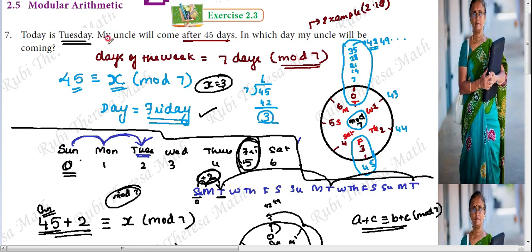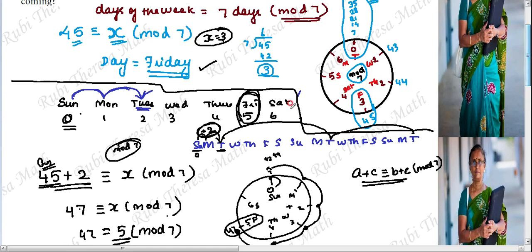When you get 0 to 6 on the cycle, you identify what day it is. The cycle starts from Sunday. If you add 2 days or 3 days, you jump forward on the clock. Moving towards the right means adding. So the numbers match up correctly. Friday is your answer.